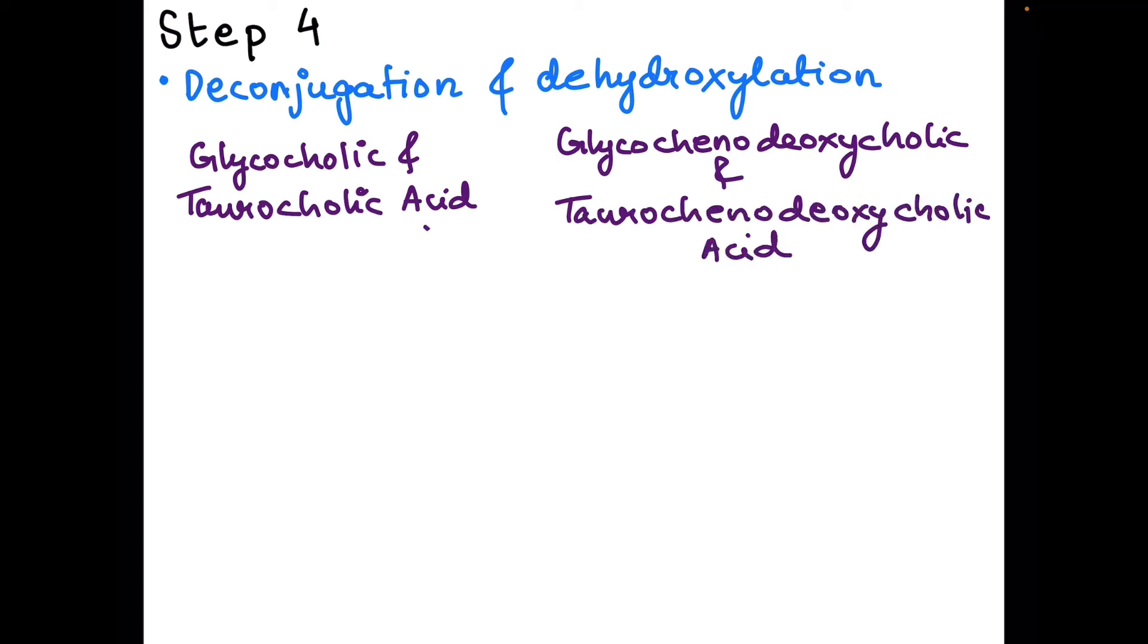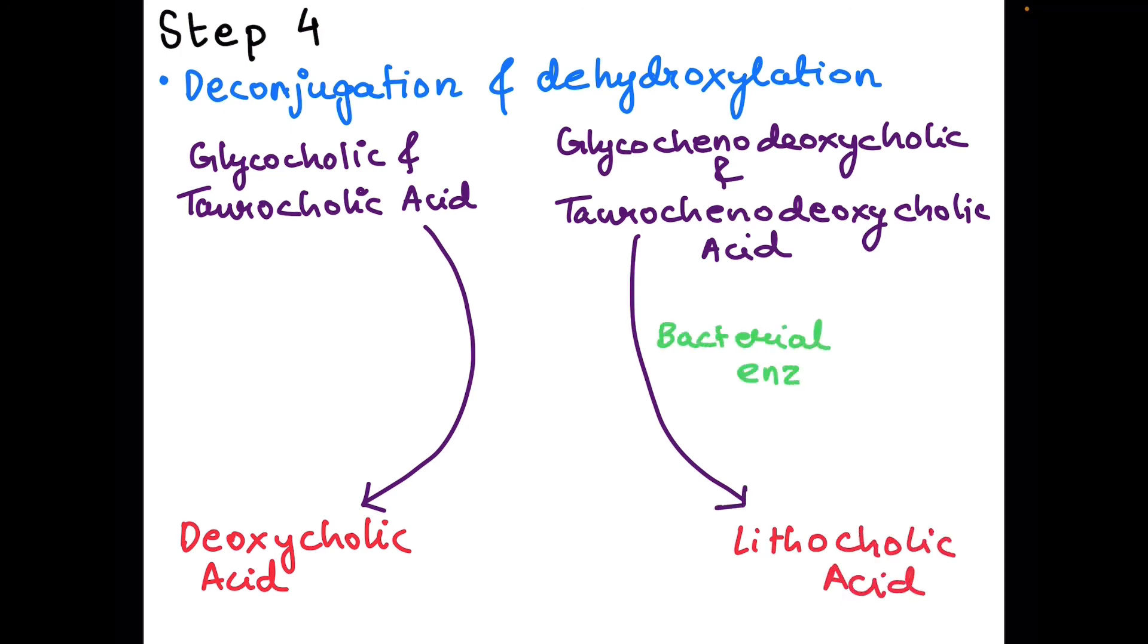This step is done with the help of bacterial enzymes that are secreted by bacteria in the small intestine. Glycocholic acid and taurocholic acid are converted to deoxycholic acid, and glycochenodeoxycholic acid and taurochenodeoxycholic acid are converted to lithocholic acid. Bacterial enzymes are involved in this conversion.